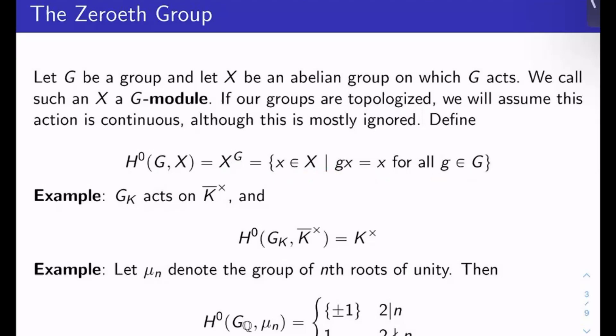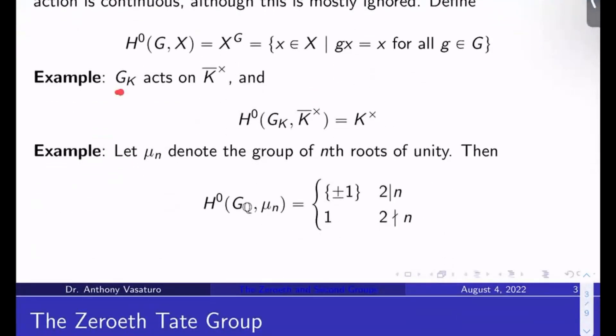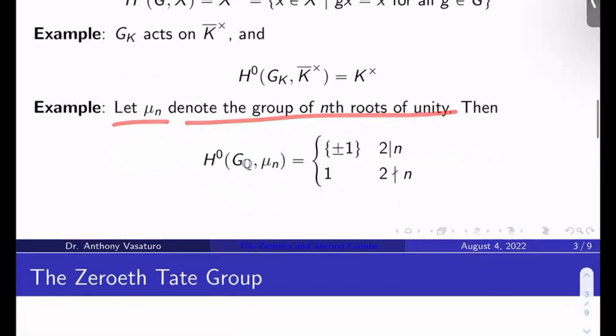Some examples: G_K acts on K̄ cross or K̄*, if you like, the non-zero elements of K̄. And H⁰(G_K, K̄*) is just K*. This is one of the central tenets of Galois theory. Let μ_n denote the group of nth roots of unity. Then H⁰(G_Q, μ_n) is {±1} if 2 divides n and {1} if 2 doesn't divide n. The absolute Galois group of Q acts on the nth roots of unity, and that action only fixes the root of unity 1 if n is odd, but it will fix -1 as well if n is even.